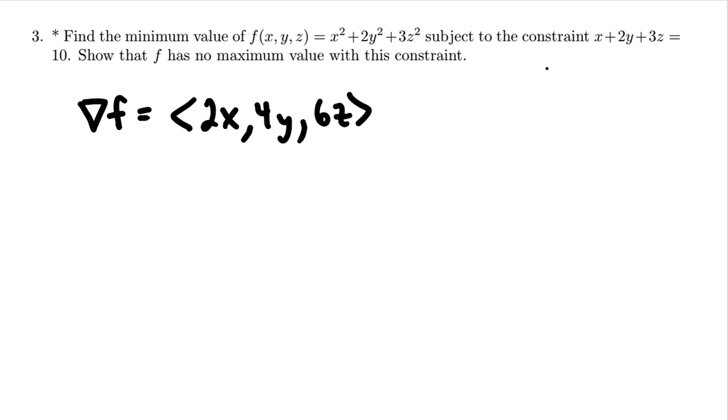G is a function that you make from your constraint by setting it equal to 0. And so the gradient of g is going to be 1, 2, 3.